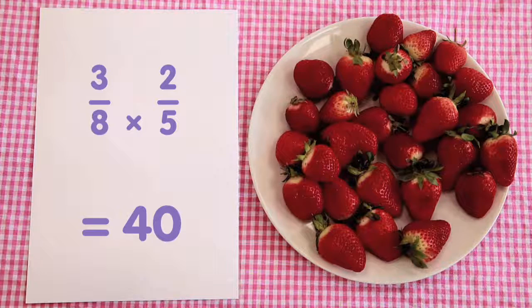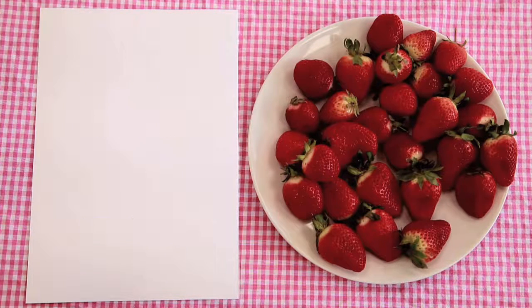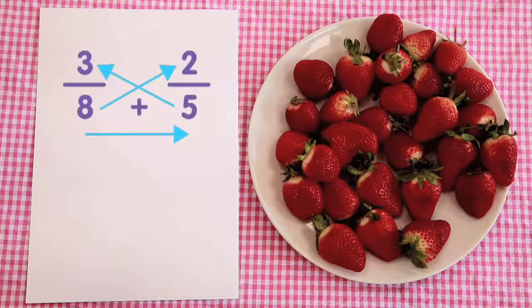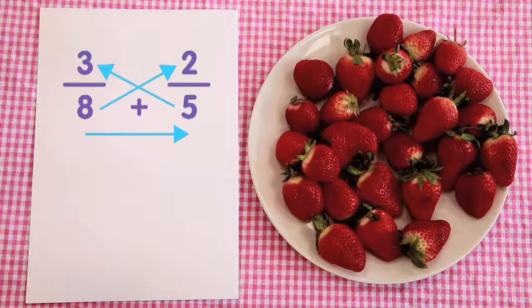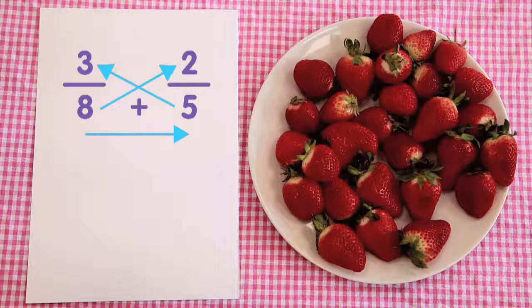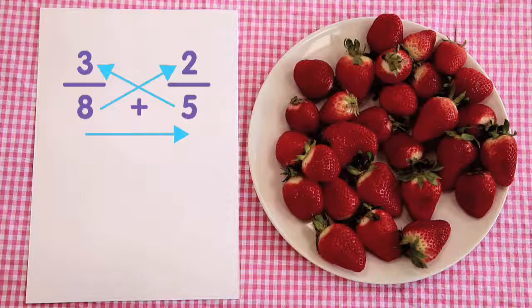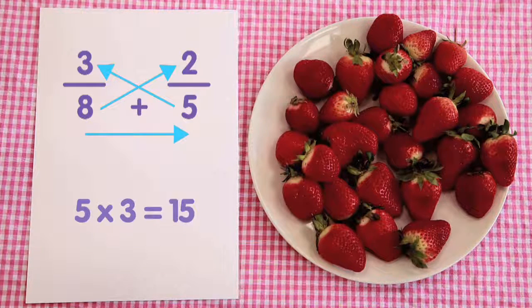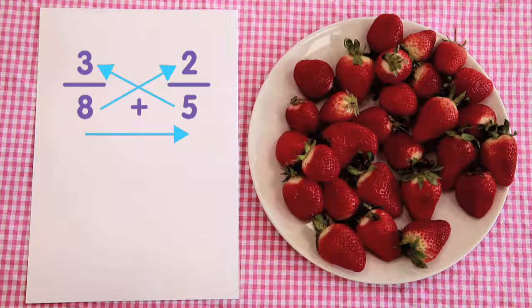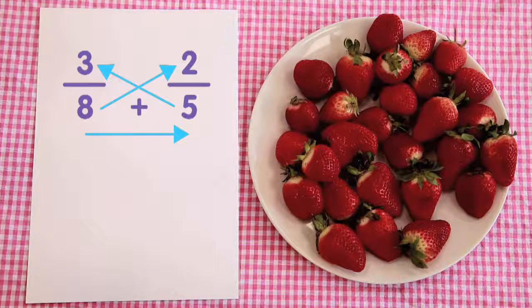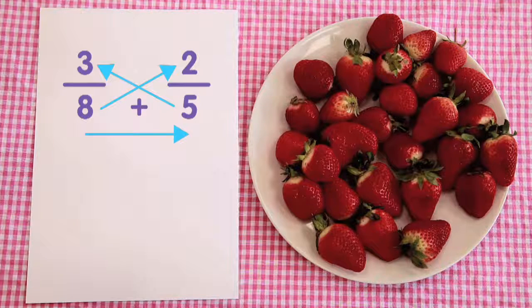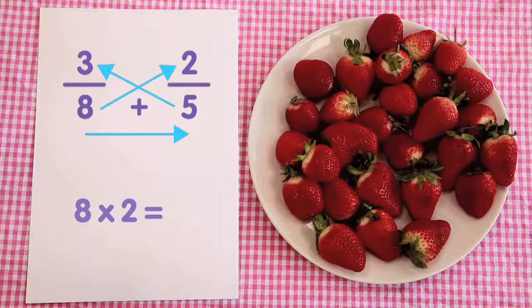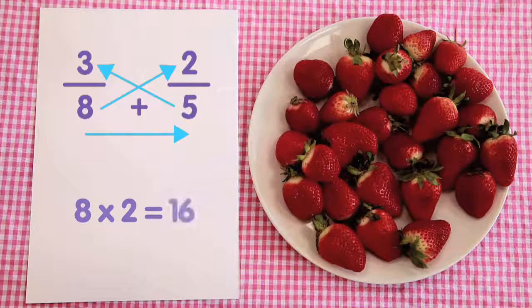We now do something called cross-multiplication. We always start at the bottom-right denominator and multiply by the top-left numerator. So five multiplied by three equals fifteen. We now move to the bottom-left denominator and multiply by the right numerator. Eight multiplied by two equals sixteen.